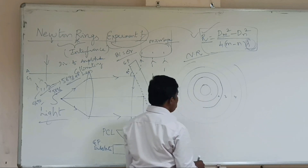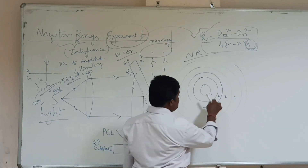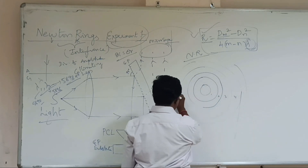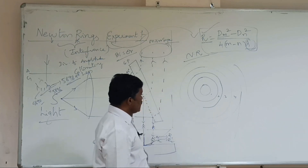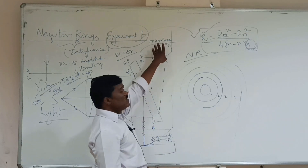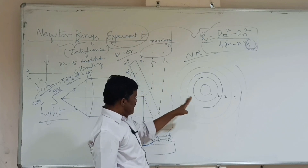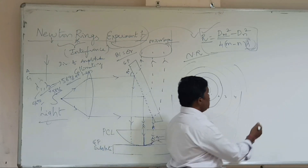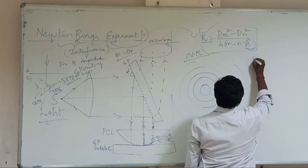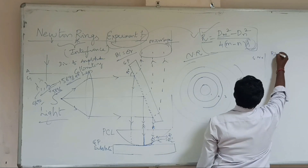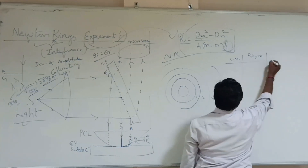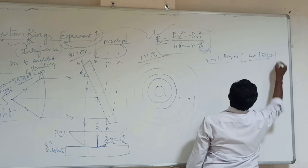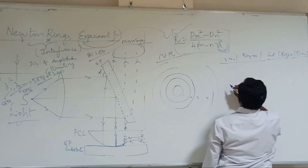What we do — for example, if you want to find the radius of curvature, say this is 0, 1, 2, 3, 4, and this is the 4th ring. You need a table with serial number, ring number, and columns for left and right readings, and dM.